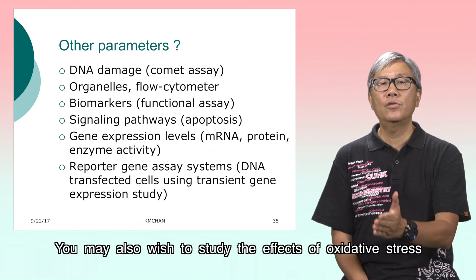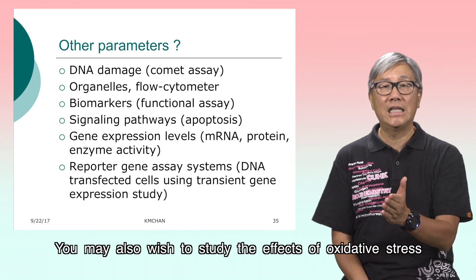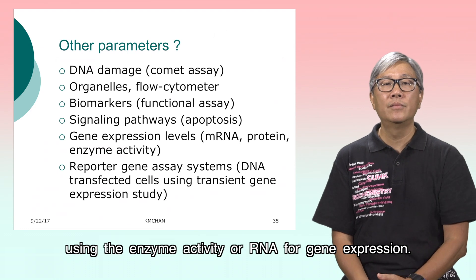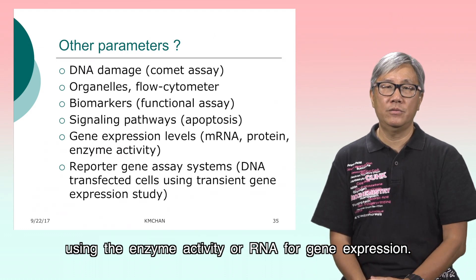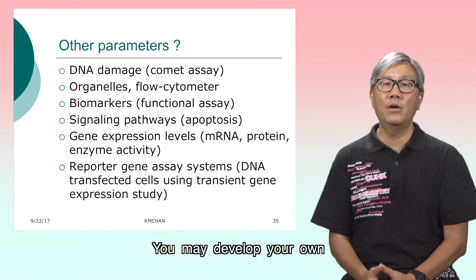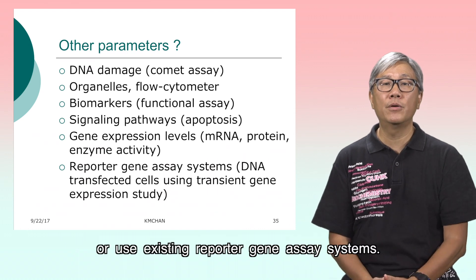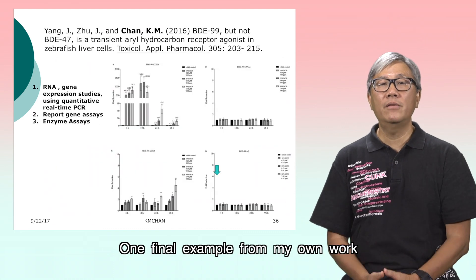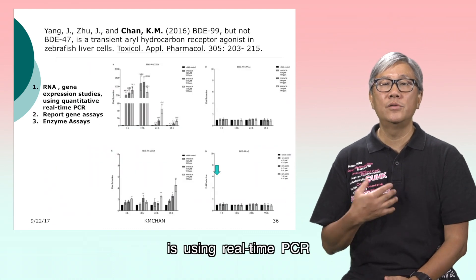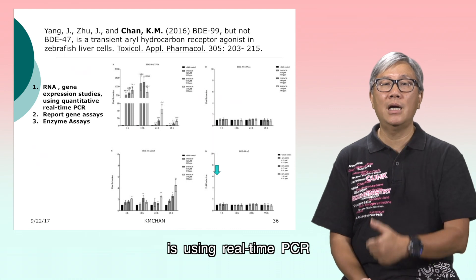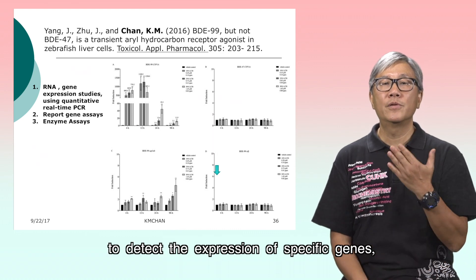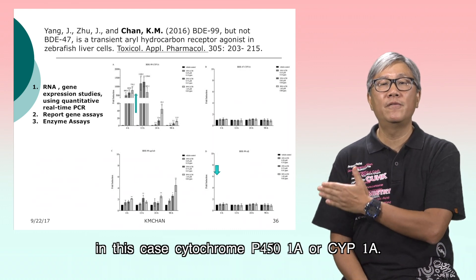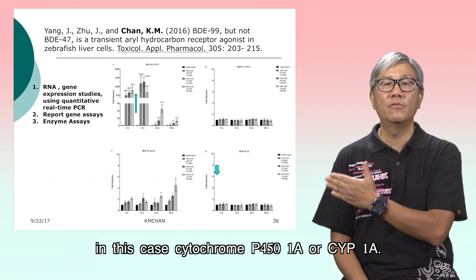You may also wish to study the effects of oxidative stress using enzyme activity or RNA for gene expression. You may develop your own or use existing reported gene assay systems. One final example from my own work is using real-time PCR to detect the expression of specific genes — in this case, cytochrome P450-1A (CYP1A).